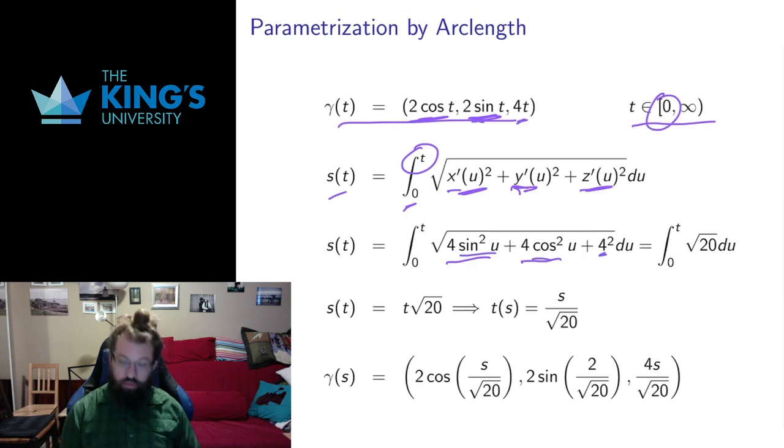Then here I have a sine squared plus cosine squared which is nice. So that's just going to give me four times one. Four squared is 16. Four plus 16 is 20. So this just gives me the integral from zero to t of root 20 with no other terms. And integrating this is going to give me root 20u from zero to t. Putting in the bounds of integration is going to give me t root 20.